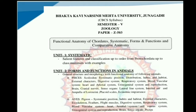Now we are going to discuss unit No. 2: Forms and Function in Animals. In this unit, you need to study the general structure and morphology with functional anatomy of the following animals. This unit has 2 classes: class Pisces and class Aves. In class Pisces, we have Scoliodon, and class Aves has Pigeon.